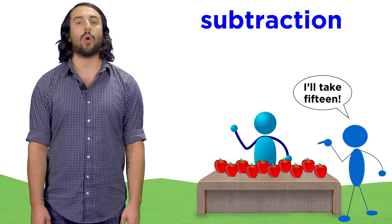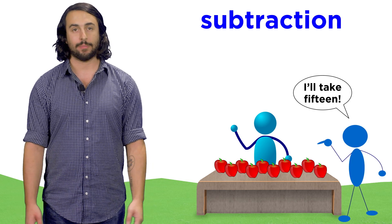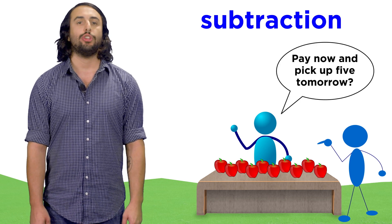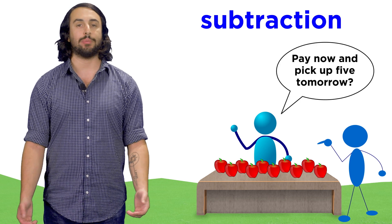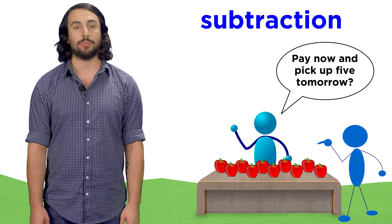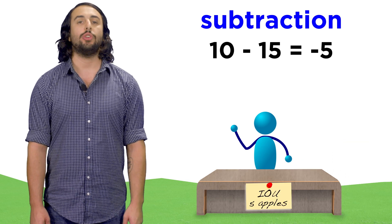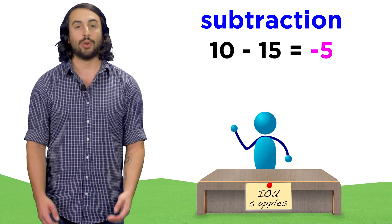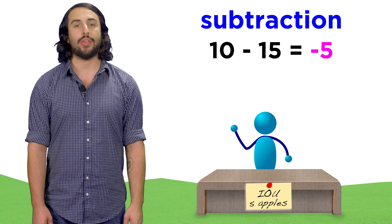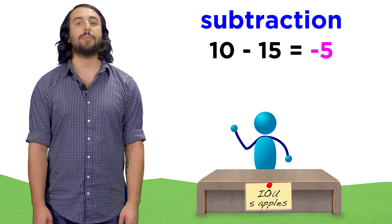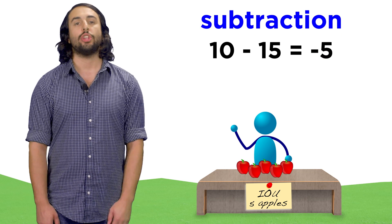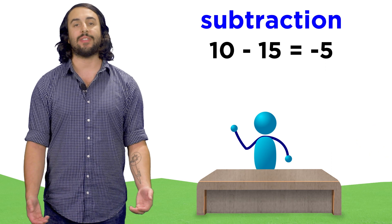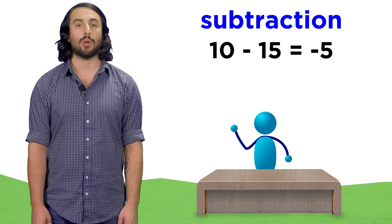But what happens if someone wants more apples than you have? Let's say someone wants fifteen apples. You could promise them fifteen apples, saying you'll get five more tomorrow. So in a sense, you could say that after the transaction, you have negative five apples, which is five fewer apples than no apples. This is because once you get more, you immediately owe five of them, so it's like you will need five apples just to get to zero apples.